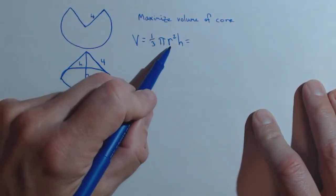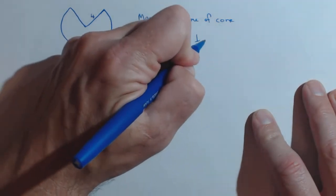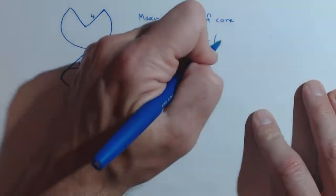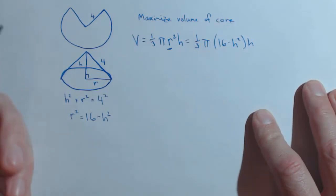We're going to apply that to here. We're going to substitute for the r squared. We get one-third pi times 16 minus h squared times h.